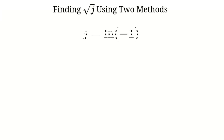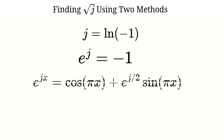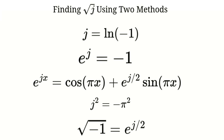In this system, the virtual unit is j, and it follows some interesting properties. First, j is defined as the natural logarithm of negative 1, which means e raised to the power of j equals negative 1. Second, the exponential formula for e^(j·x) is cosine(π·x) plus e^(j/2) times sine(π·x). From this formula, we derived that j² equals negative π². And finally, the square root of negative 1 in this system is e^(j/2).